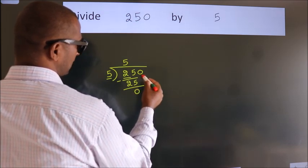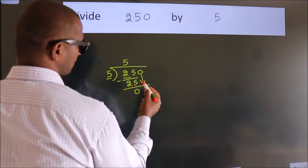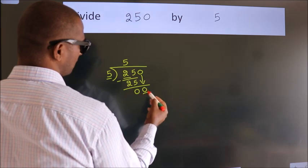After this, bring down the beside number. So, 0 down. So, 0.